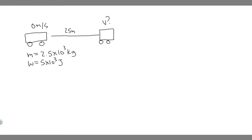In this problem, we're told a mechanic pushes a 2.5 times 10 to the 3 kilogram car from rest to a speed of V, doing 5 times 10 to the 3 joules of work in the process. During this time, the car moves 25 meters. Neglecting friction between the car and the road, find A: V, and B: the horizontal force exerted on the car.